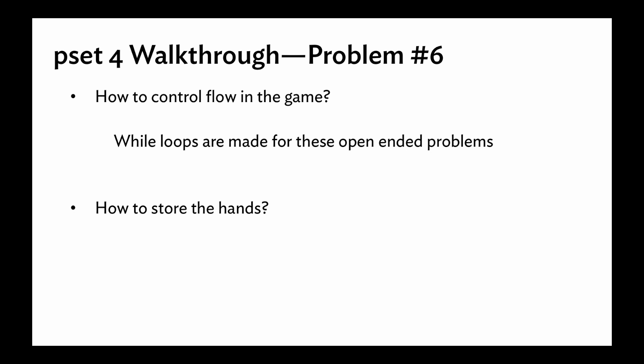Some key questions: how are you going to control the flow of the game, and how are you going to store the new hand and the previous hand? The control of flow — this is obviously what while loops are made for: open-ended problems where you don't know when it's going to end, but it only ends on a certain condition, for example when the user hits E. Break is your friend. I like to set these up as a while-true loop, then put a break inside for all conditions that end the loop. Other people prefer putting the condition in the while statement itself — while the input is not E. Those are equivalent; it just depends on how you like to do it.